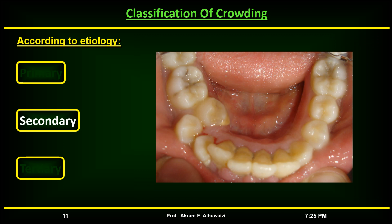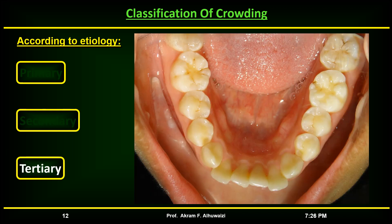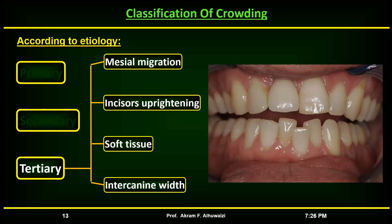Secondary crowding is an acquired anomaly caused by mesial drift of the molars as a result of premature loss of deciduous teeth. Tertiary crowding, on the other hand, occurs between the ages of 18 to 20, primarily in the lower anterior segment, and may be attributed to several factors such as mesial migration, incisor uprightening, soft tissue pressure, and intercanine width.